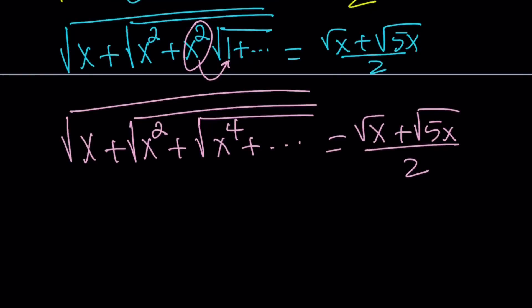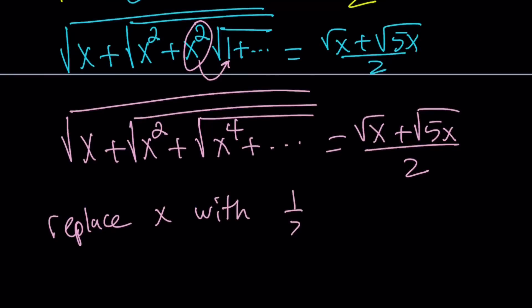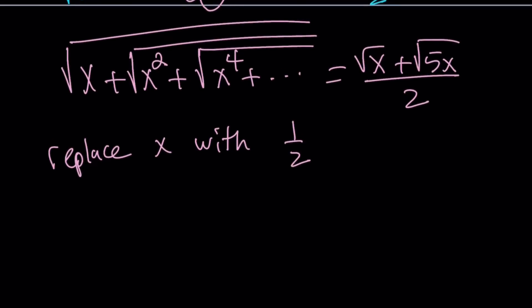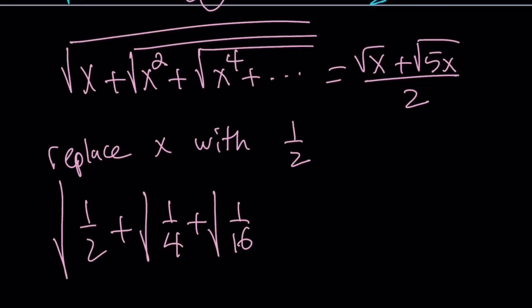Now why did we do all of this? Because our expression starts off with 1/2 inside the radical, and then it's squared and squared again. So we can replace x with 1/2. Think of this as a function or infinite series — just replace x with 1/2 everywhere. It's going to look like: the square root of 1/2 plus the square root of 1/4 plus the square root of 1/16, so on and so forth — and that's exactly what we're looking for.